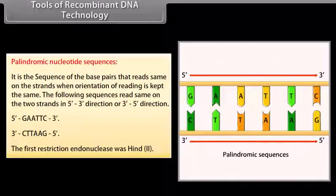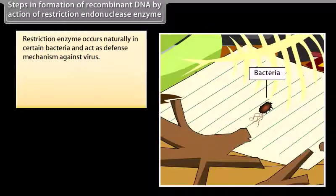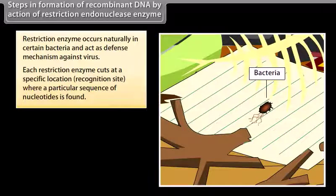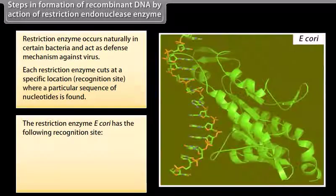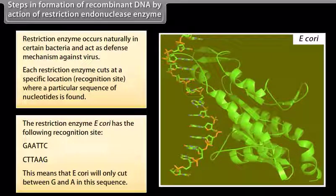The first restriction endonuclease was HindII. Steps in formation of recombinant DNA by action of restriction endonuclease enzyme. Restriction enzymes occur naturally in certain bacteria and act as a defense mechanism against viruses. Each restriction enzyme cuts at a specific location called the recognition site, where a particular sequence of nucleotides is found. The restriction enzyme EcoRI has the following recognition site: 5'-G-A-A-T-T-C / 3'-C-T-T-A-A-G. EcoRI will only cut between G and A in this sequence.